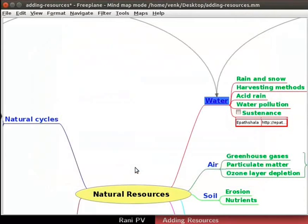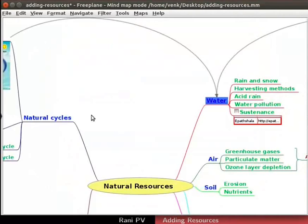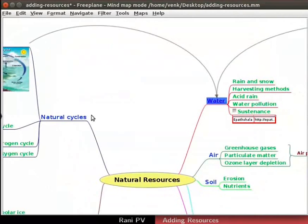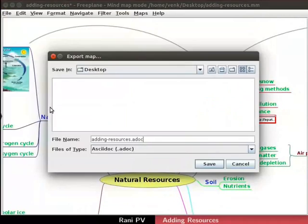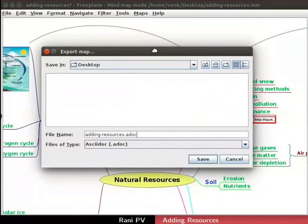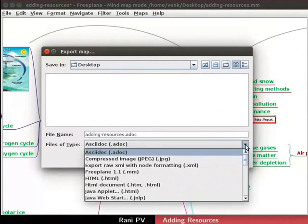Next, save the map by pressing Control and S. We require a different form of the map for ease of share and distribution. For this purpose, click on File, Export Map. A dialog box appears. Click on Files of Type dropdown. Notice the various file options for users to choose from.